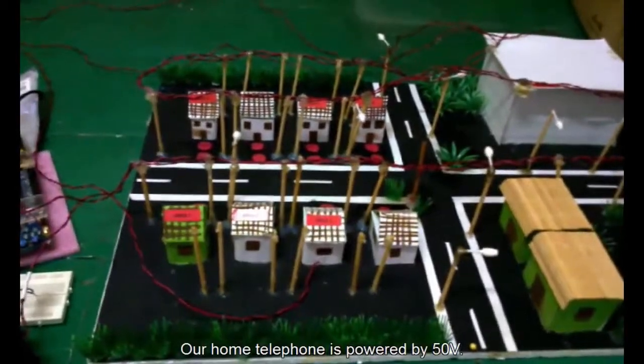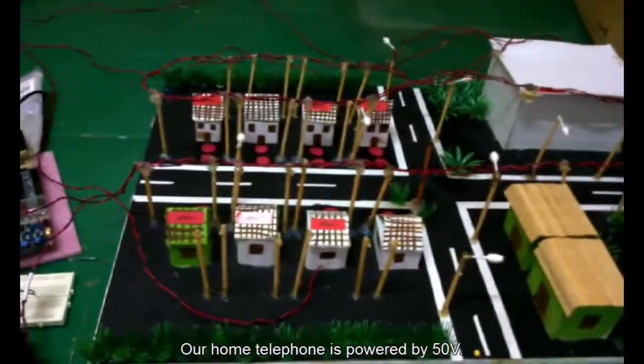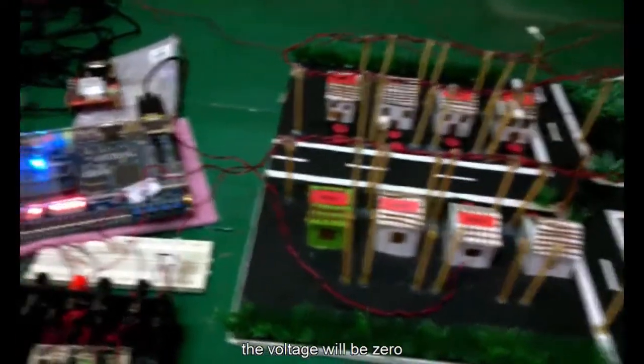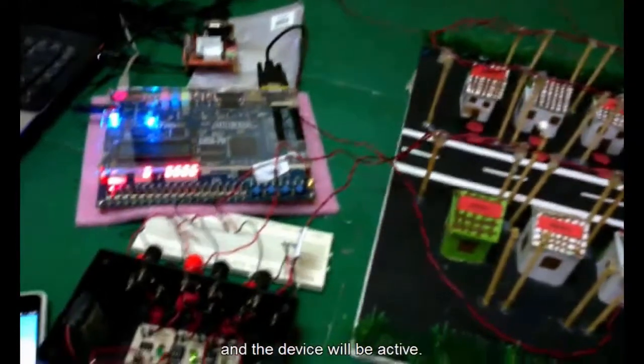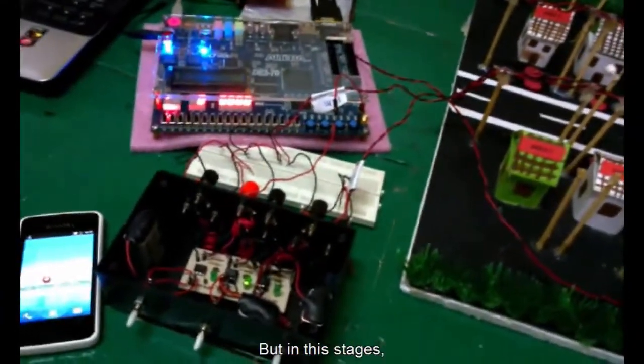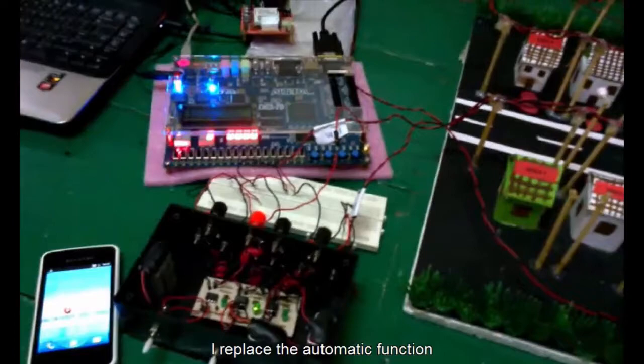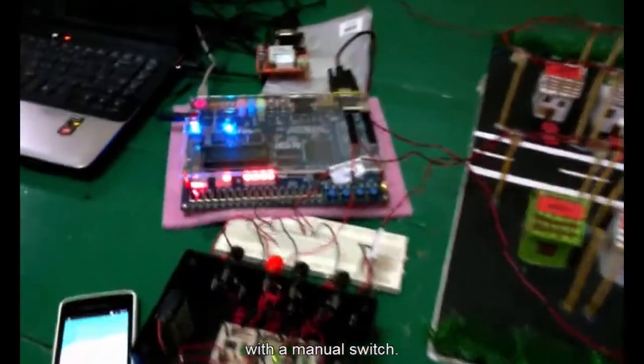Our home telephone is powered by 50 volts. When someone cuts the cable, the voltage drops to zero and the device activates. But at this stage, I replaced the automatic function with a manual switch.